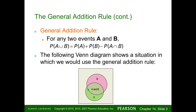You have the probability of A, shown in green, plus the probability of B, shown in pink. Then you subtract the intersection A and B, because you don't want to count that twice — you've already counted it once in A and once in B. The Venn diagram shows why we do that; we just don't want to count the overlap.